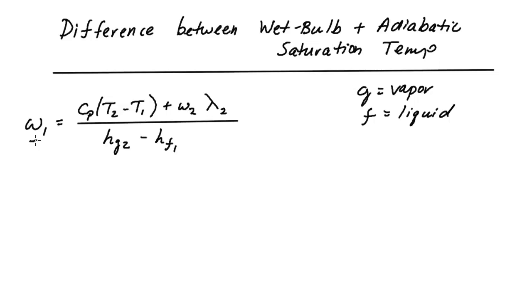In the last video we got this equation for getting the absolute humidity ratio for a state coming into our adiabatic saturation temp experiment. Just to remind you, I'm going to use the subscript g for vapor and f for liquid, and this is the latent heat of vaporization at a given temperature.